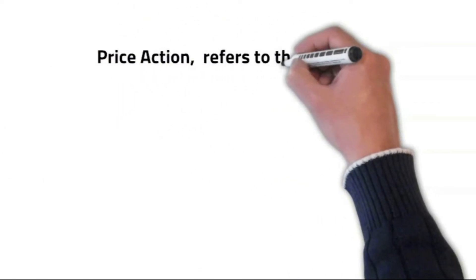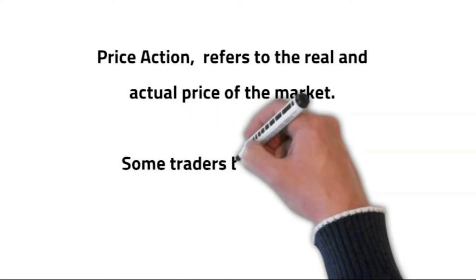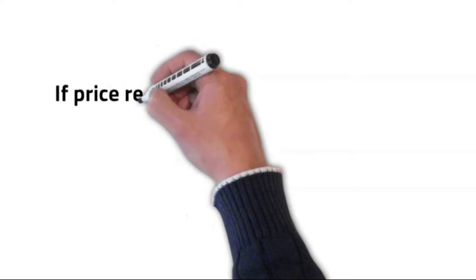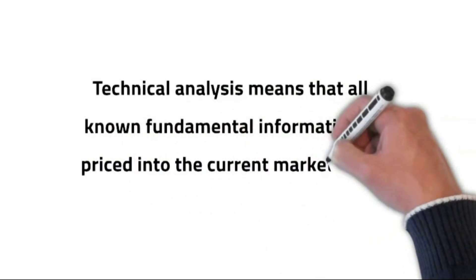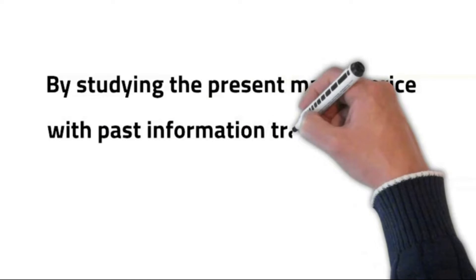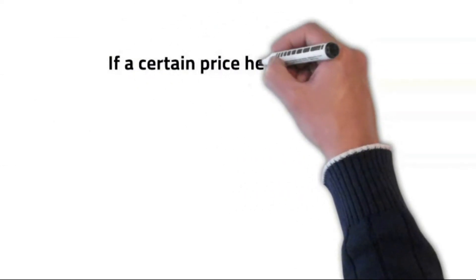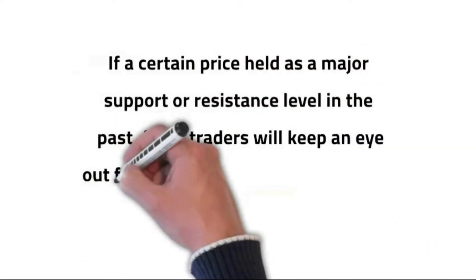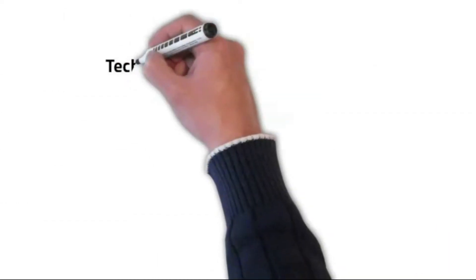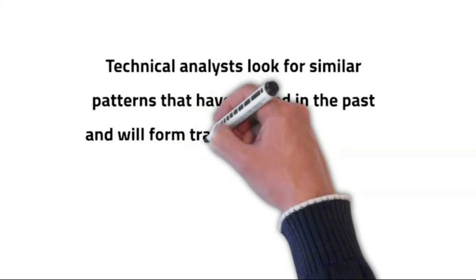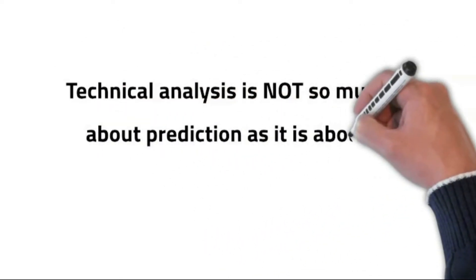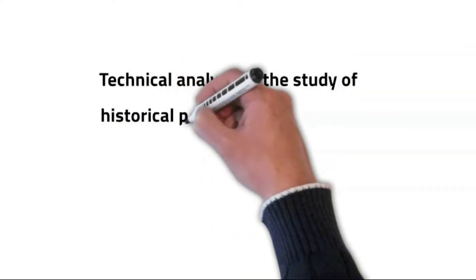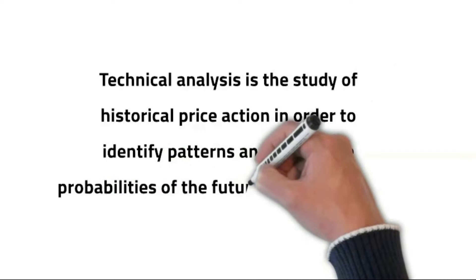Price action refers to the real and actual price of the market. Some traders believe in only price action trading — if price reflects all the information that is out there, then price action is all one would really need to make a trade. Technical analysis means that all known fundamental information is priced into the current market price, and by studying the present market price with past information, traders will be able to spot trading opportunities. Technical analysis is not so much about prediction as it is about probability — it is the study of historical price action in order to identify patterns and determine probabilities of the future direction of price.